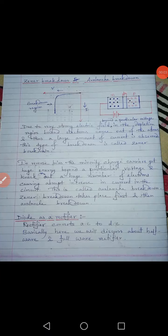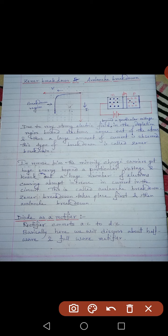In this video we will discuss Zener breakdown and avalanche breakdown. In the previous videos, when we drew the reverse characteristic, we got a breakdown region. The corresponding voltage is called breakdown voltage. The question is: what is this breakdown region and why is it found when the diode is in reverse bias?